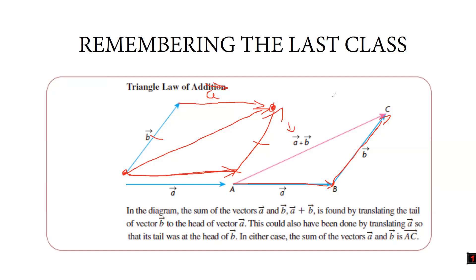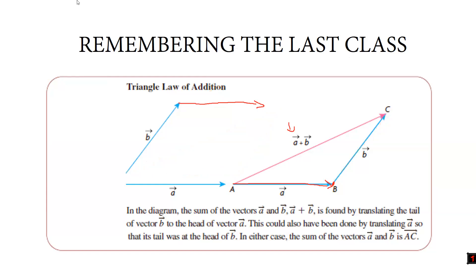For addition, we use tail-to-nose. The tail of the one we're adding should be at the nose of the one we're adding to. Tail-to-tail is for subtraction. In the diagram, the sum a plus b is found by translating the tail of vector b to the head of vector a — or vice versa. In either case, the sum is AC.